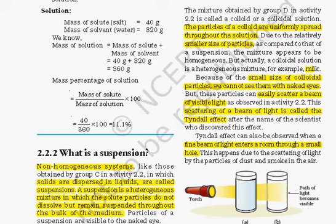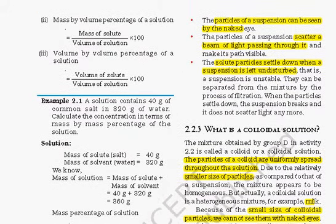A suspension is a non-homogeneous system in which solids are dispersed in a liquid. It is a heterogeneous mixture, but the solute particles do not dissolve — they remain suspended throughout the bulk. If you mix dirt or sand into water, you can still see the suspended dirt particles. Properties of suspension: it is heterogeneous, its particles are large enough to be seen with the naked eye, it scatters a beam of light passing through it, and solute particles settle down when the suspension is left undisturbed.